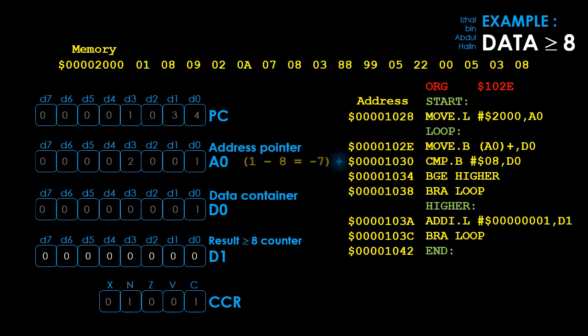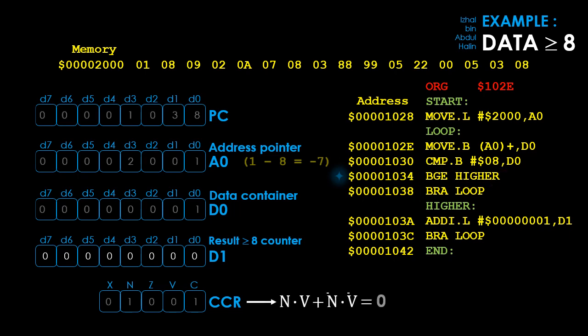This causes the status register to be updated to 01001, because the result is a negative number and a borrow into the MSB was required to perform the subtract operation. The program counter is now pointing to address 1034 and is updated to point to the next instruction's address. The BGE higher instruction is executed, causing the condition codes for BGE — N and V OR'd with N-bar and V-bar — to be evaluated. The result is 0.